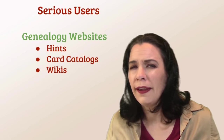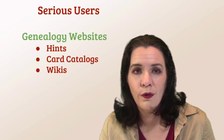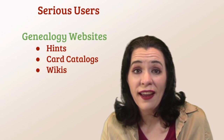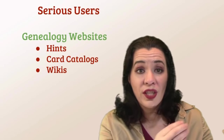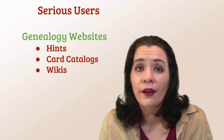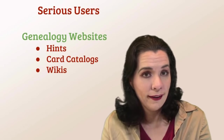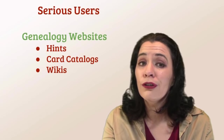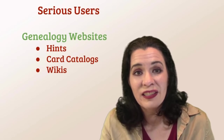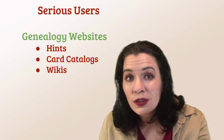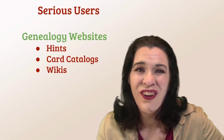Ever wonder why you can't find a particular record? Why can't I find the birth record for an individual? You have to check out the wiki pages. FamilySearch has a wonderful wiki collection. The wiki pages tell you specifically when records were collected for a particular time and place, and whether your ancestor had their birth before, during, or after the institution of record collection by the state or church. That's where you'll find answers to those questions.